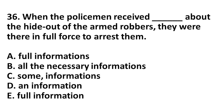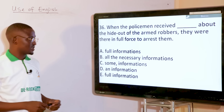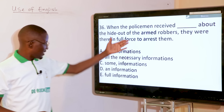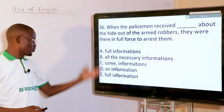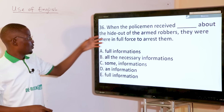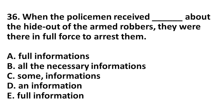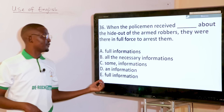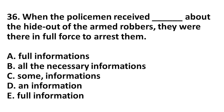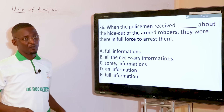When the policemen received dash about the hideout of the armed robbers, they were in full force to arrest them. Information is also a plural word — a singularia tantrum — it doesn't take S. Wherever you see it with S, those options are disqualified — options A, B, and C. Information still remains information. When they received the full information about the hideout of the armed robbers, they were there in full force to arrest them — option E.